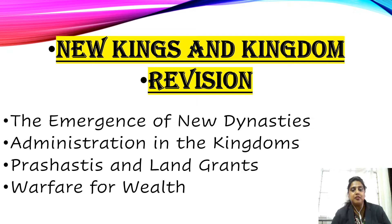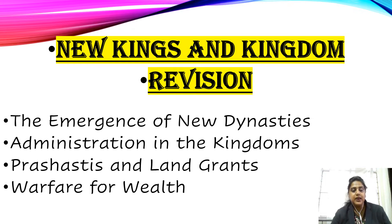The first point is the emergence of new dynasties. In the 7th century, we found big landlords or warrior chiefs in different regions of the subcontinent. The existing kings acknowledged them as subordinates or samantas. These samantas were expected to bring gifts to their kings, be present in the king's court, and provide military support.